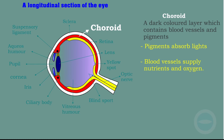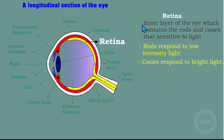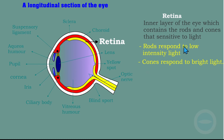The next part is the retina. The retina is the inner layer of the eye which contains rods and cones that are sensitive to light. Rods and cones are activated by the stimulus, which is light. The function of the retina: rods respond to low intensity light, while cones respond to bright light.